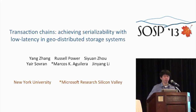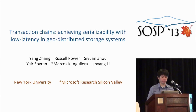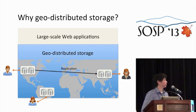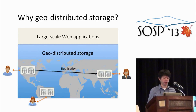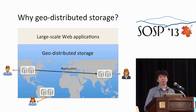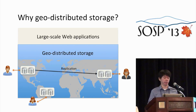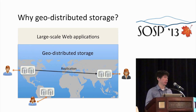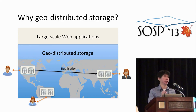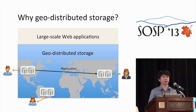My talk today will be about geo-distributed storage systems. We care so much about geo-distributed storage systems because nowadays we have many large web applications, such as Google+, Facebook, Twitter, and eBay, that are all built on such a storage system. By distributing data across many data centers, we can put the data near the user and ensure fast access. And also, by replication, we can let those applications tolerate the failure of a whole data center.